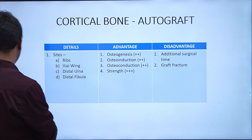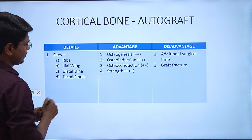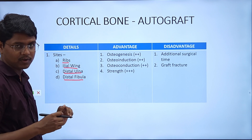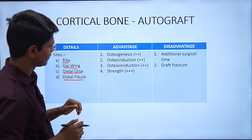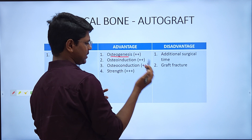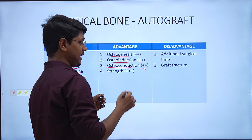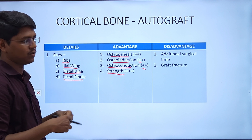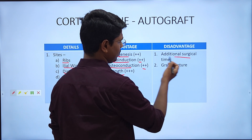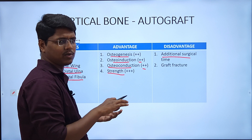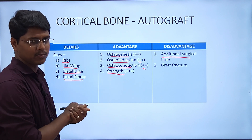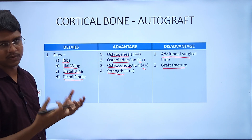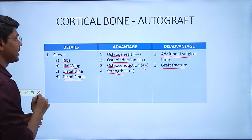Next is cortical bone autograft. Common harvest sites are the ileal wing, distal ulna, and distal fibula. Advantages: good osteogenesis, good osteoinduction, good osteoconduction, and — unlike cancellous — it also provides strength due to its hard structure. Disadvantages: additional surgical time, and there is also a chance that the harvested graft may fracture.